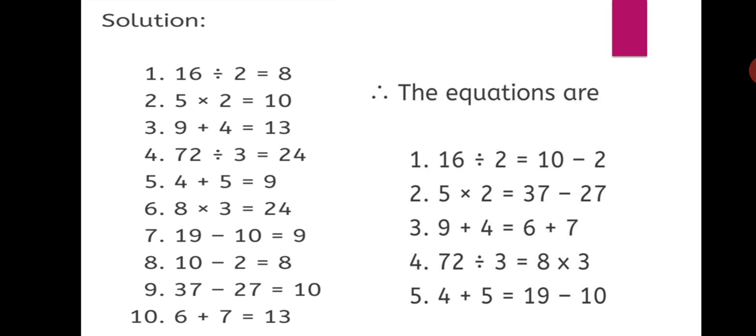Fifth question: 4 plus 5 equals 9. And the seventh one, 19 minus 10 is also 9. So we write the equation: 4 + 5 = 19 - 10, as both the answers will be 9 itself.